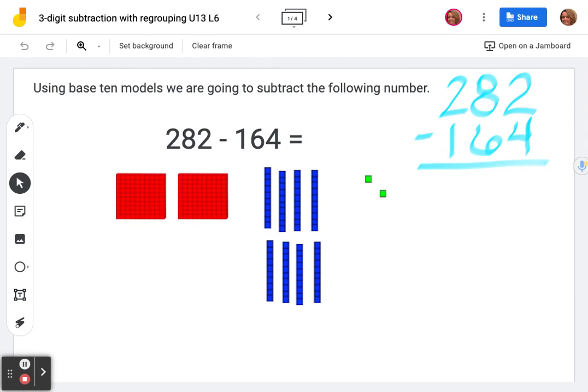So if we start over here in the ones place, we see that we're supposed to take four ones from two ones, but we can't take four ones from two little ones. So we have to go over here and we have to bust up a ten.